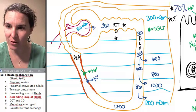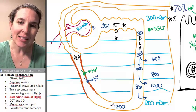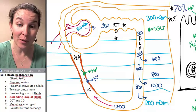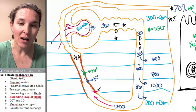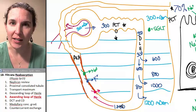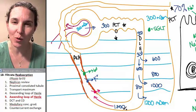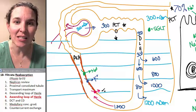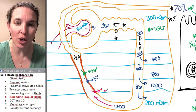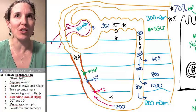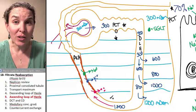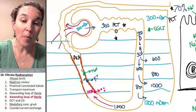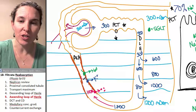As the filtrate that has 1,200 milliosmol concentration moves up the ascending loop of Henle and has particle solutes pumped out, what's going to happen to its concentration? Particles leave, concentration goes down. As more particles leave, concentration continues to go down.